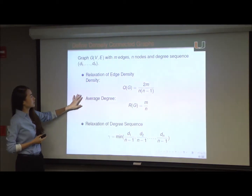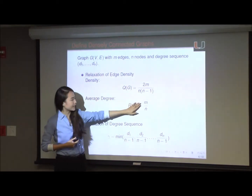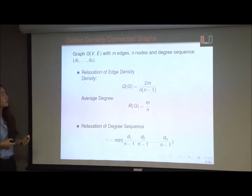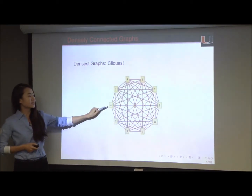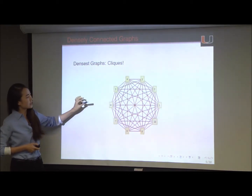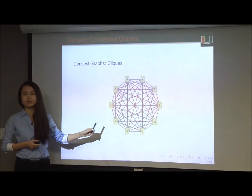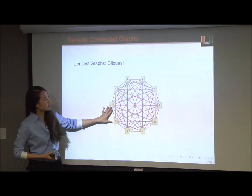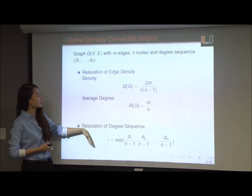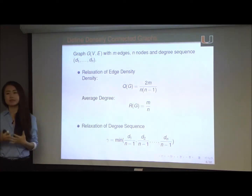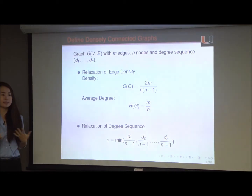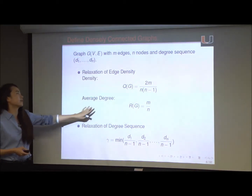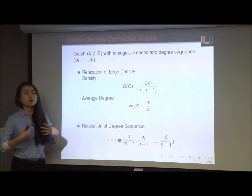We can also relax the definition of cliques through the average degree, which is the total number of edges divided by the total number of nodes. We can also relax the definition through the degree sequence. For example, in the size-10 clique, the degree sequence is a vector with 10 elements and every element is 9, meaning each individual has 9 friends. In general, if we have a friendship network of 10 individuals and everyone has at least 7 friends, we can see that network is pretty dense. Relaxing the definition of a clique in different ways gives us different objective functions for defining what we mean by dense subgraphs.